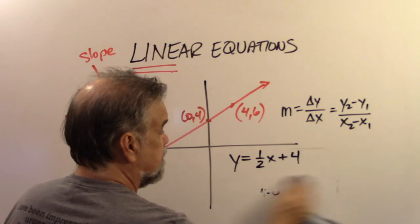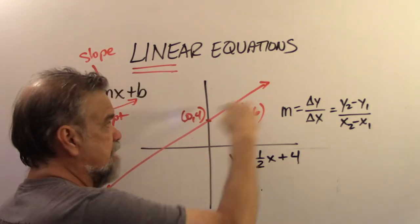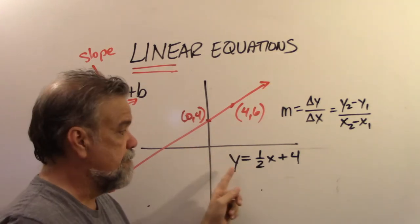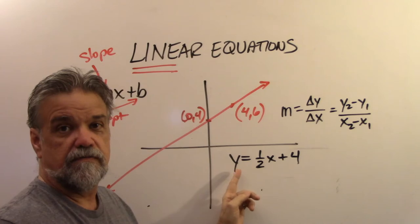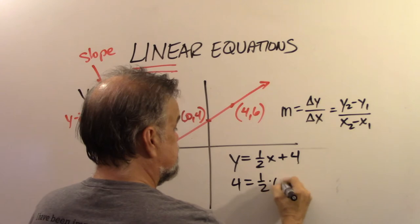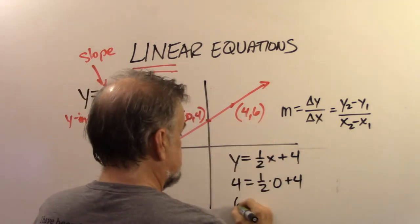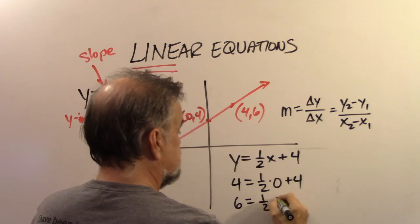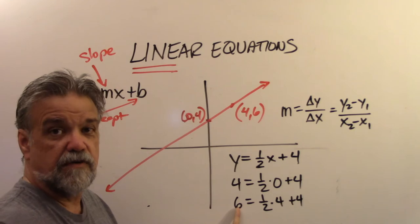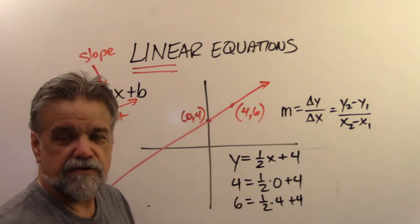I want to remind you something about equations and graphs: every single point on that graph must make the equation true. So 4 must equal 1/2 times 0 plus 4, which it is. And 6 must equal 1/2 times 4 plus 4 — half of 4 is 2, plus 4 is 6. When you get your equation, just check it and make sure it actually works.